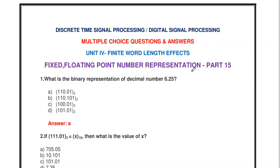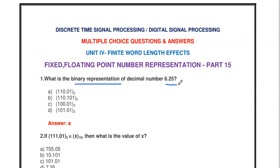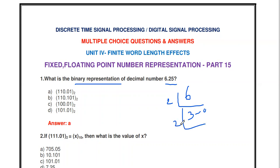We cover fixed point and floating point number representation through objective questions. The first question: what is the binary representation of the decimal number 6.25? For the integer part, 6, you divide by 2 — you get 3 with remainder 0, then divide again to get quotient 1 with remainder 1. So the binary representation of 6 is 110.